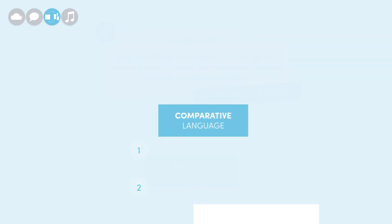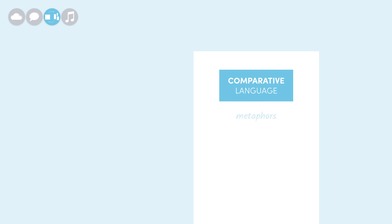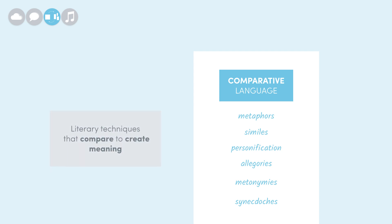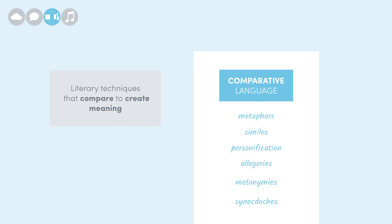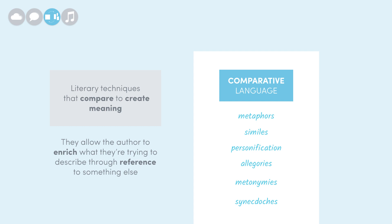A lot of textbook figurative language is what we might call comparative language. For instance, metaphors, similes, personification, allegories, metonymies, and synecdoche all compare one thing to another to create meaning. Comparing things is always useful for authors, as it allows them to enrich the thing they're trying to describe through reference to something else.